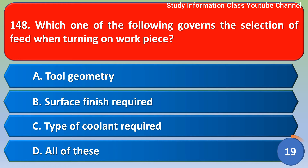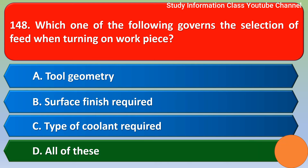Next question: Which of the following governs the selection of feed when turning a workpiece? Option A: job geometry, Option B: surface finish required, Option C: type of coolant required, Option D: all of these. The correct answer is Option D, all of these.